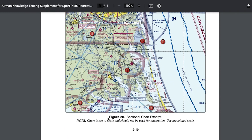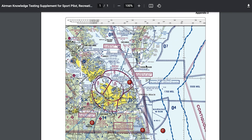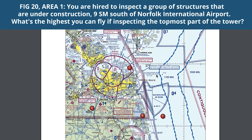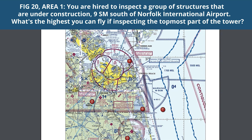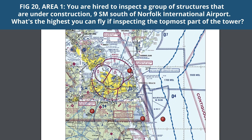We've got five questions we're going through in this video. We're going to be looking at three charts: figure 20, figure 25, and figure 78. I'm going to zoom in to make it a little bit easier to see — there's a lot going on in these charts. So let's hop into question one. Refer to figure 20, area one. Area one is this red circle here; we can see area three down here and area six up here. Let's zoom into area one.